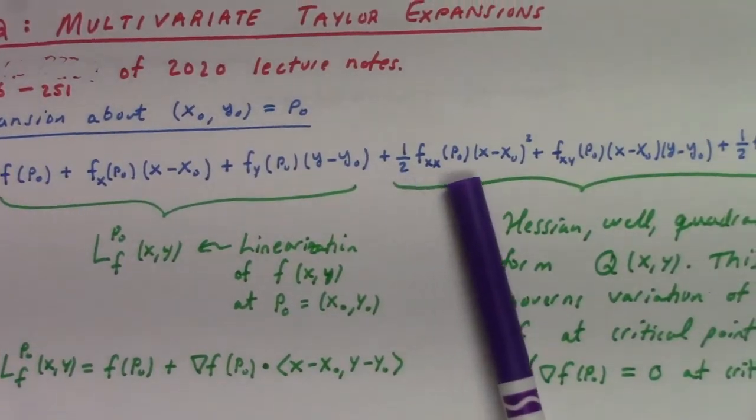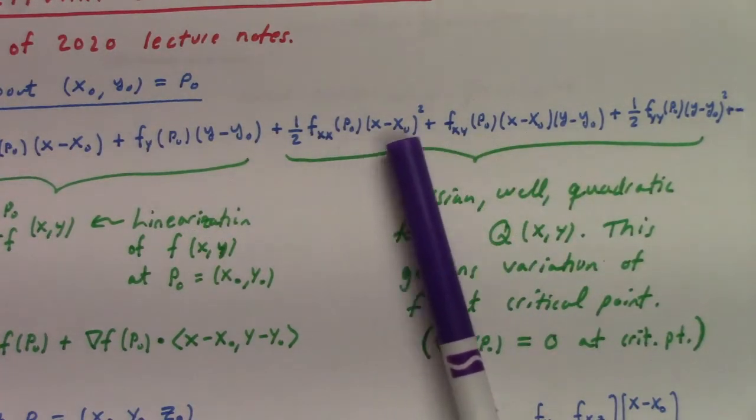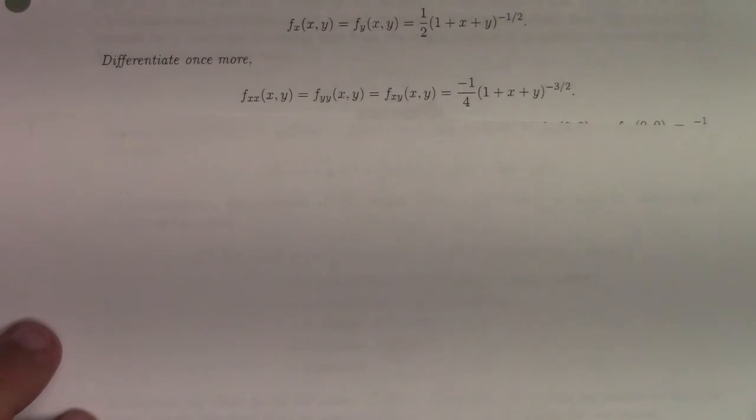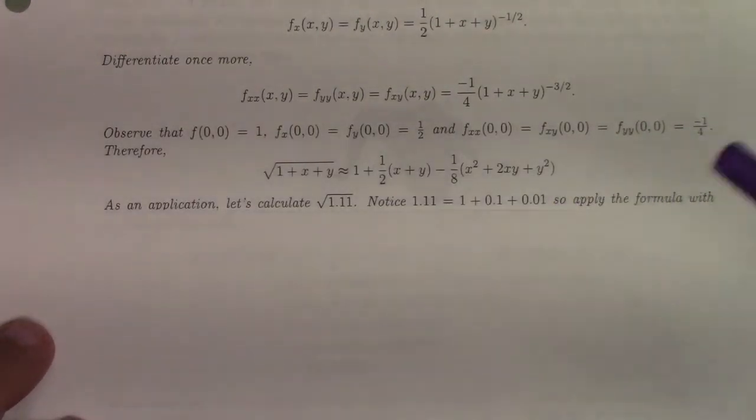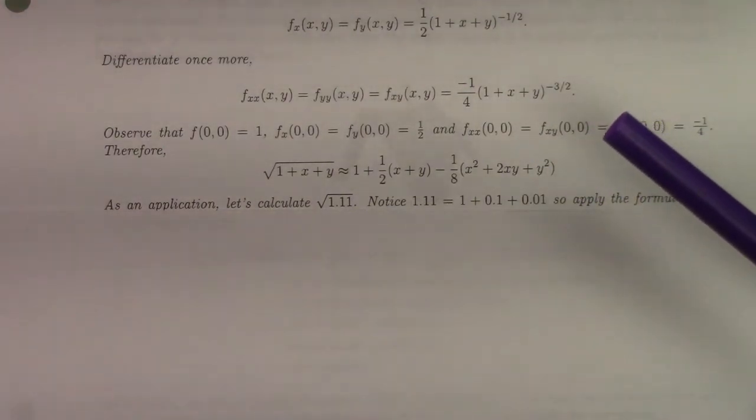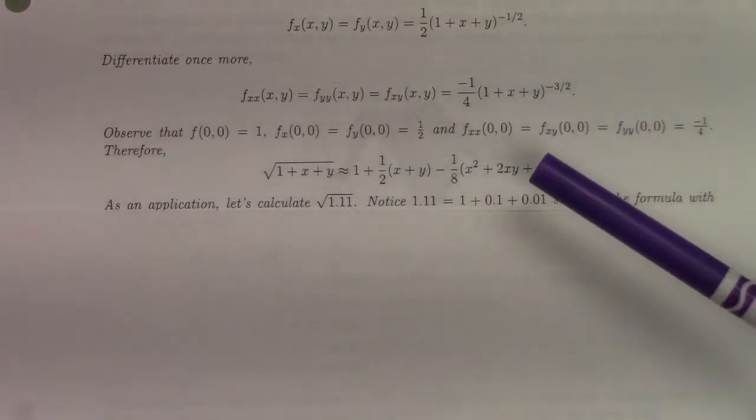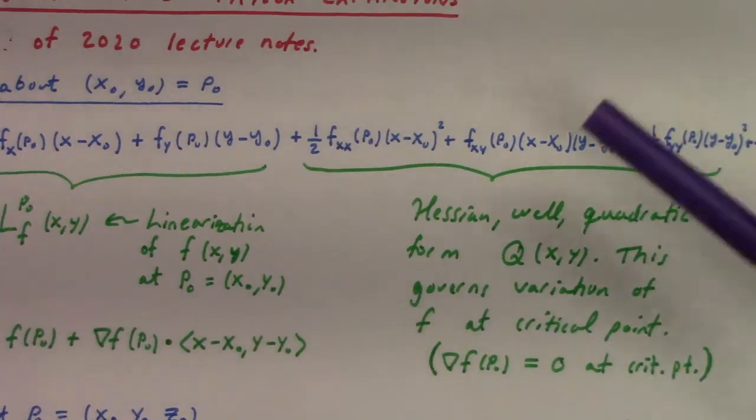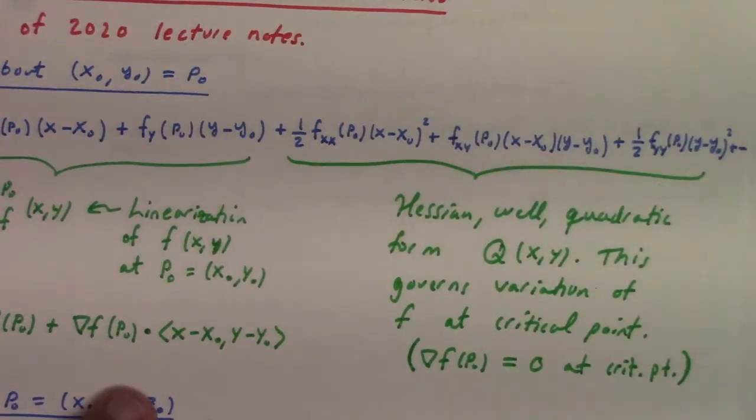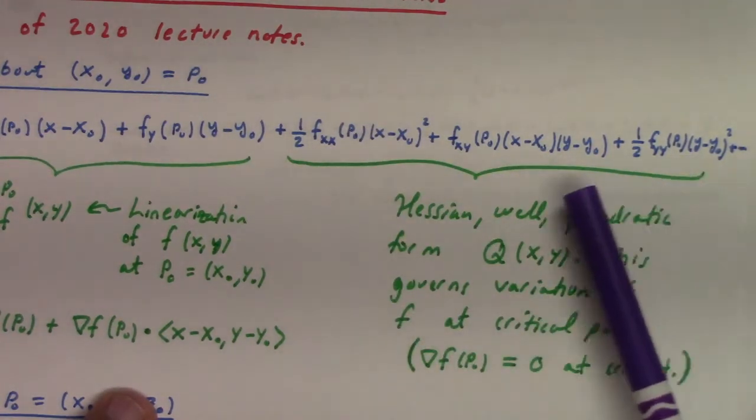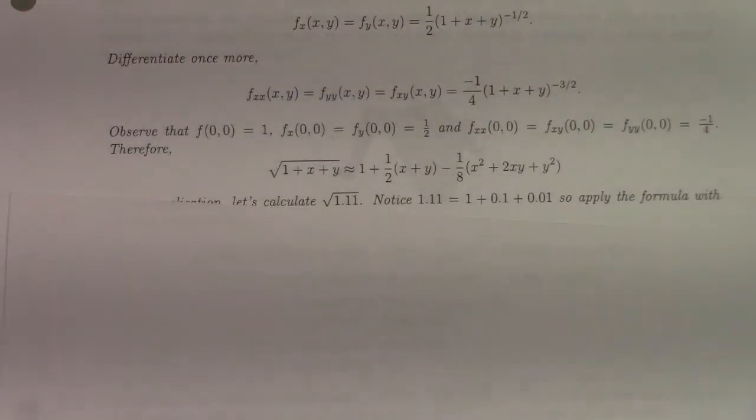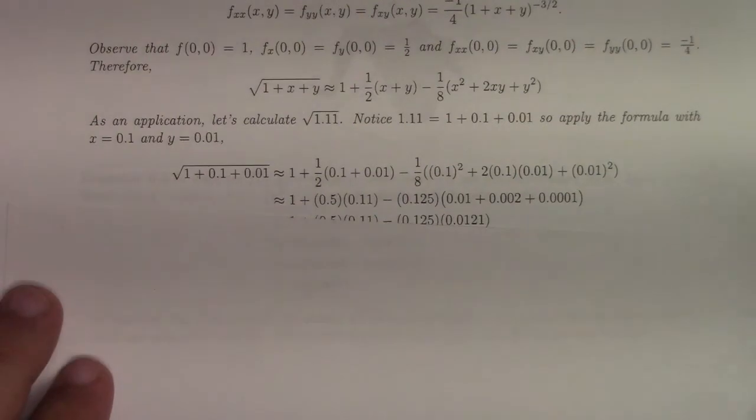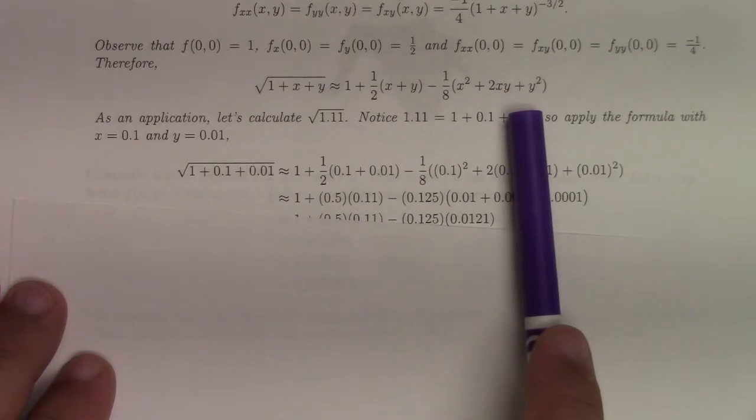And then there's a half in the formula, so minus one-fourth times one-half is minus one-eighth, but that two has to be put there to account for the two not being there. If you wanted to, you could erase that one-half, and put big parentheses, and multiply that by two. So sometimes a half is factored out, and if you factor the half out of this, it puts a two on that. This is an approximation for the square root of one plus x plus y, that's an approximation for that multivariable function close to zero.